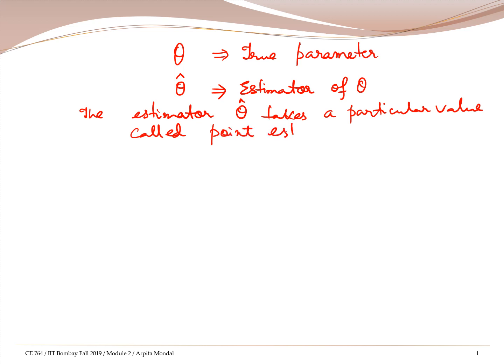If the estimator theta hat takes a particular value, which is called the estimate or the point estimate, that is observed from the sample. The sample that we had was y1, y2 to yn. We call it a point estimate because it's a single value estimated from this sample.